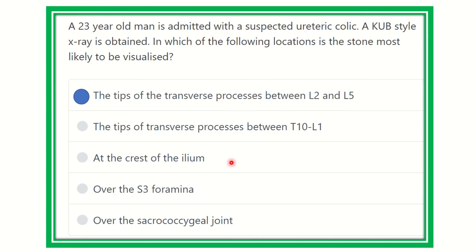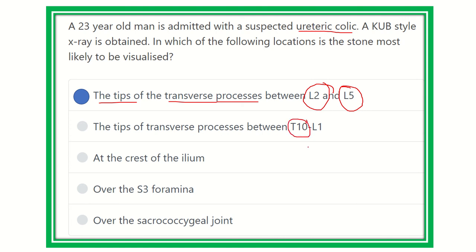Our final answer is: the tip of the transverse process between lumbar 2 and lumbar 5 vertebrae. That is the answer. During ureteric colic, the stone should be found in this area. The other option — tip of the transverse process between thoracic 10 — is not true because the kidney is located at thoracic 11 and 12, and the ureter starts at the level of lumbar 2 vertebra.